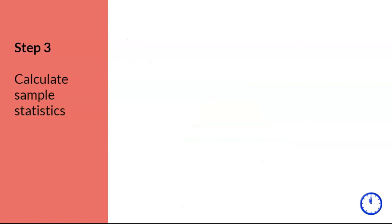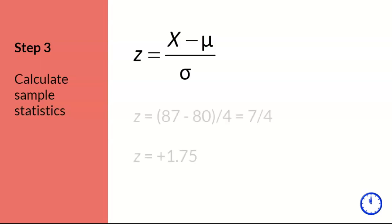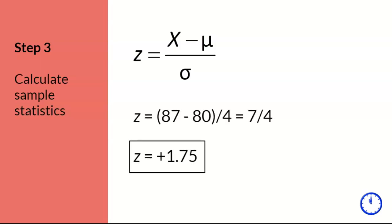Step three. This step is the same as for a two-tailed test. We use the modified z-score formula that allows us to compare our sample x-score with mu and sigma. We calculate using the values given to us, and the z-score for our one patient is z equals plus 1.75. The box indicates the final answer that I will be looking for on problem sets and exams.